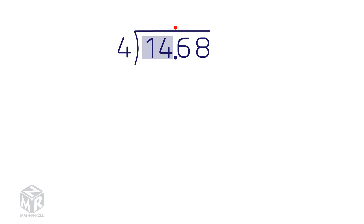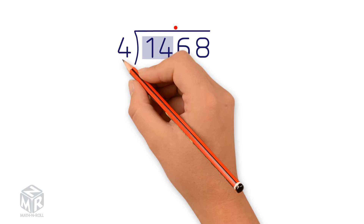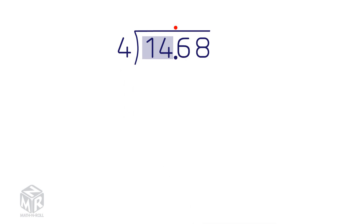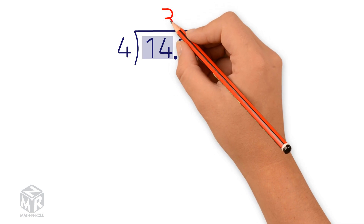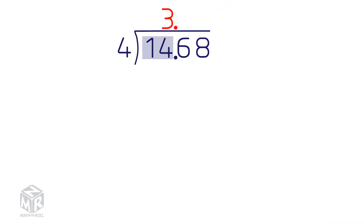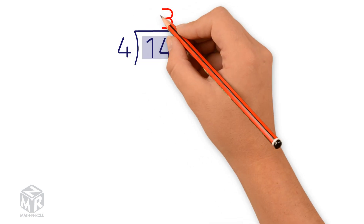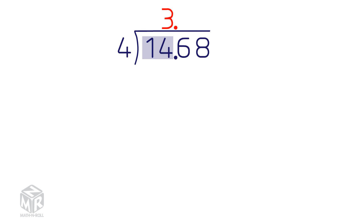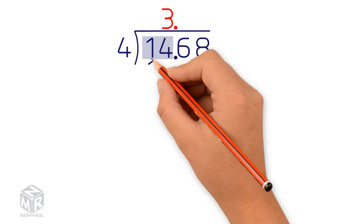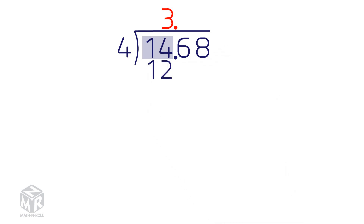We write 0, or leave a space above the 1. Let's group together the 1 and the 4. Ask yourself how many times 4 goes into 14. 4 goes into 14 3 times, so we write the 3 directly above the 4. Now we multiply 4 times 3 and get 12, and we write it directly underneath the 14.